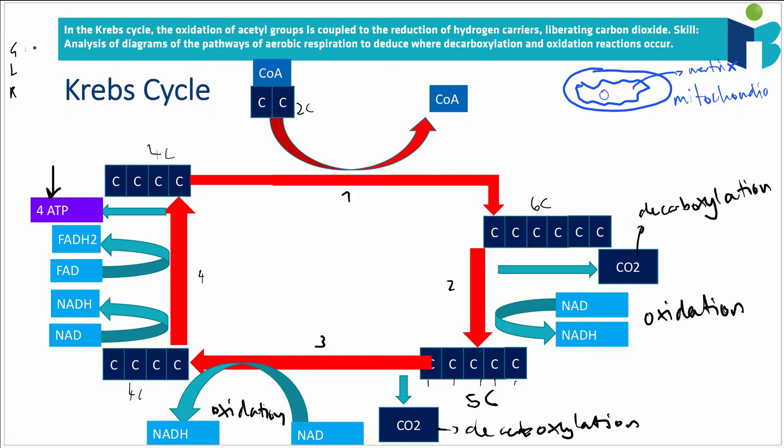In glycolysis, we produce two molecules of ATP. In the link reaction, we produce zero. And in the Krebs cycle, we produce four molecules. But I told you that when we do aerobic cell respiration, we're going to be producing lots and lots and lots of ATP. But this is kind of not really upholding its promise, right? That we're only producing four molecules of ATP. That's not that much.